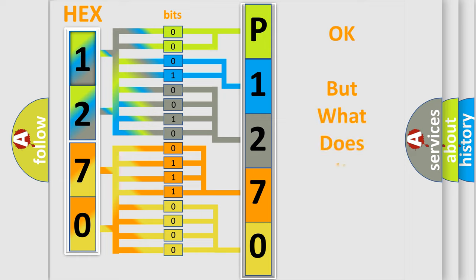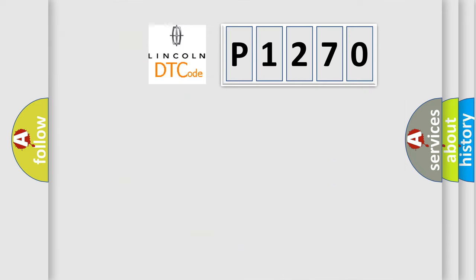The number itself does not make sense to us if we cannot assign information about what it actually expresses. So, what does the diagnostic trouble code P1270 interpret specifically for Lincoln car manufacturers?